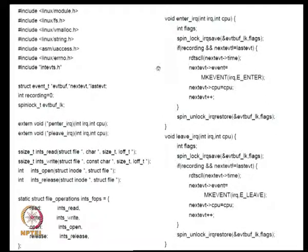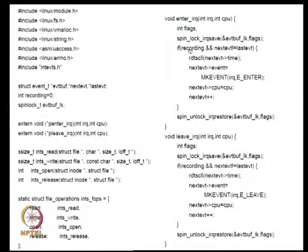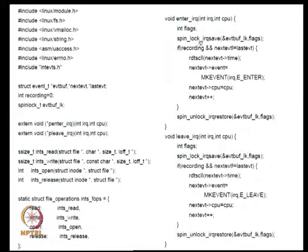A context switch can take a good part of a millisecond, whereas a spin lock is just sitting and executing instructions — each instruction takes only tens of nanoseconds. So if you can get your job done within tens of nanoseconds, trying to sleep is about 4 or 5 orders of magnitude more costly. You do not want to sleep if it is possible.